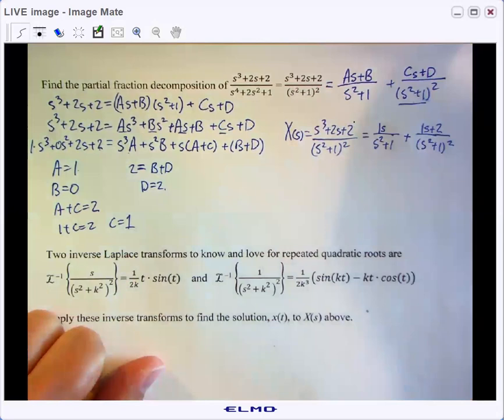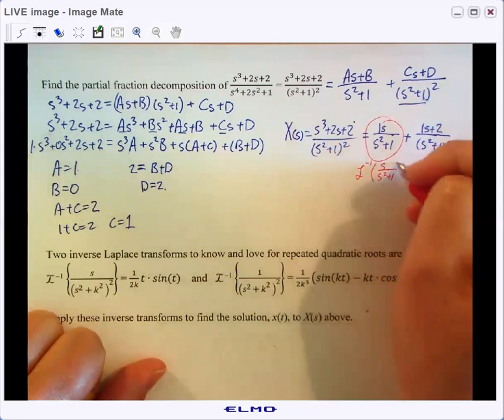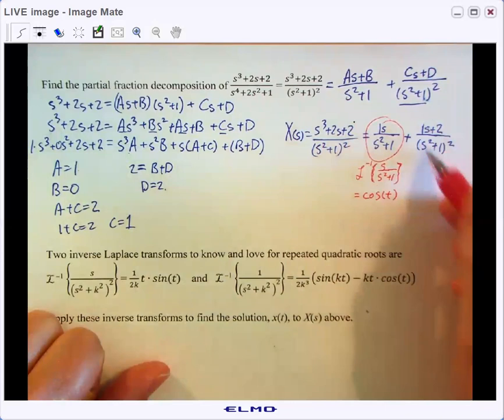Okay. Good news is we recognize this first guy. If we were to do the inverse Laplace transform on him, we recognize him as cosine of T. We didn't even have a translation there.